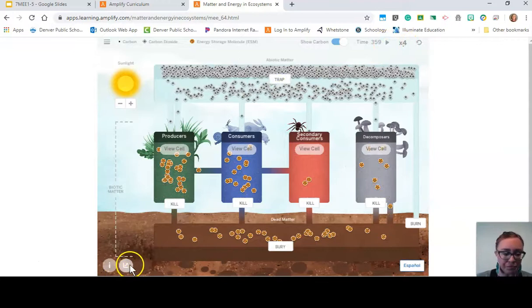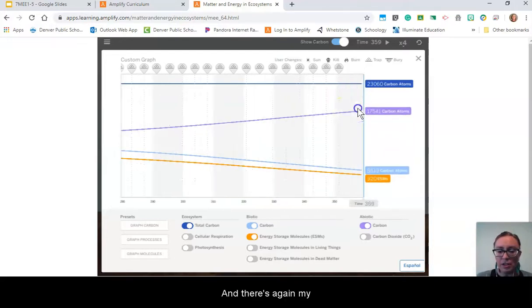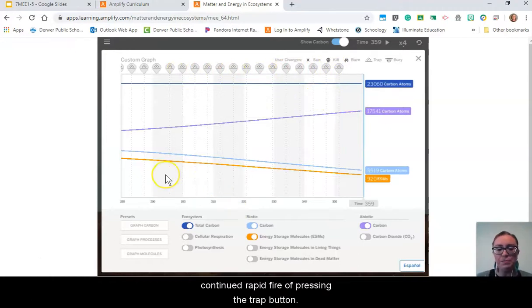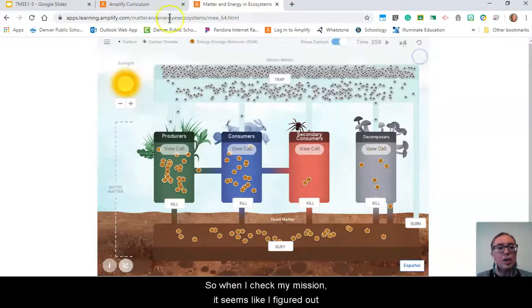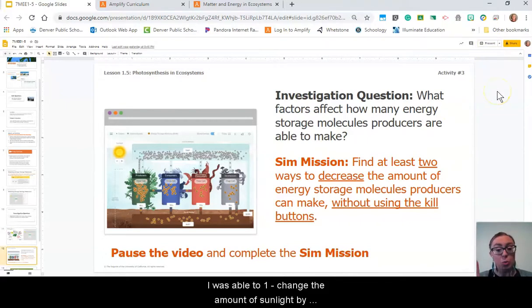Let's pause again and see what happened. There's my first part, and there's my continued rapid fire of pressing the trap button. What did you notice happening? Awesome, I noticed it too. My energy storage molecules were decreasing. When I check my mission, it seems I figured out two ways to decrease energy storage molecules without using the kill button. One, change the amount of sunlight by reducing it; and two, reduce the amount of carbon dioxide.